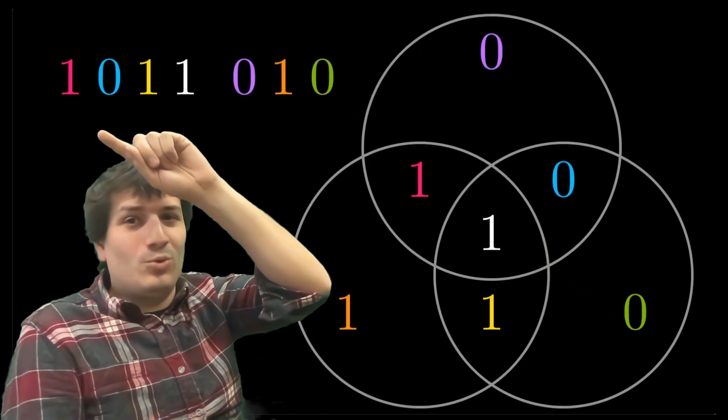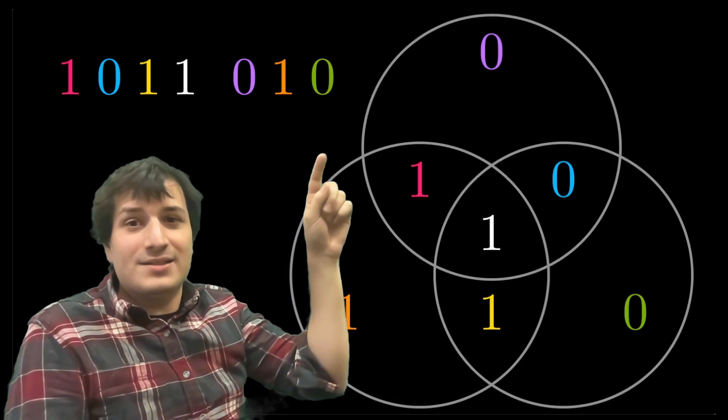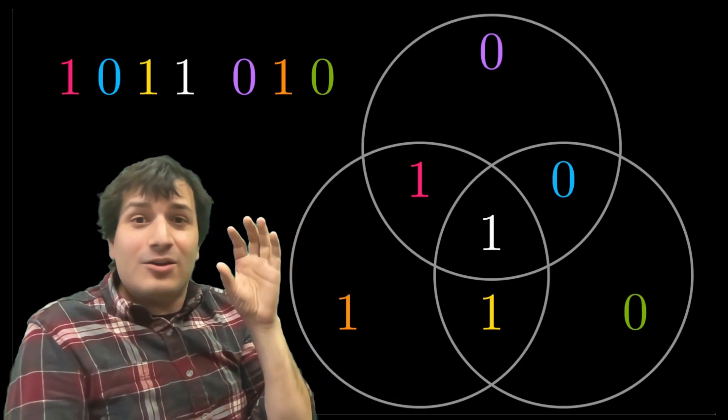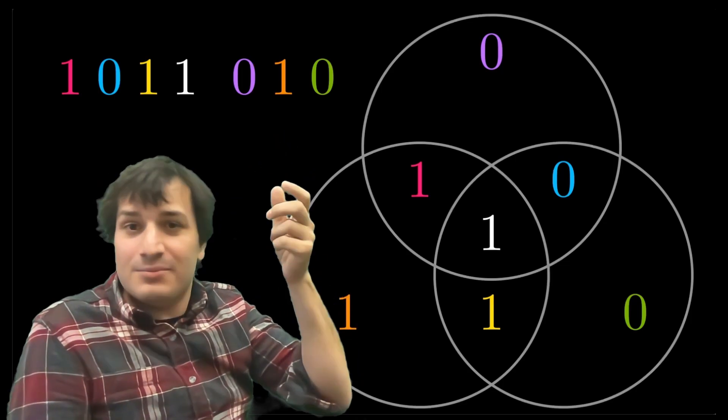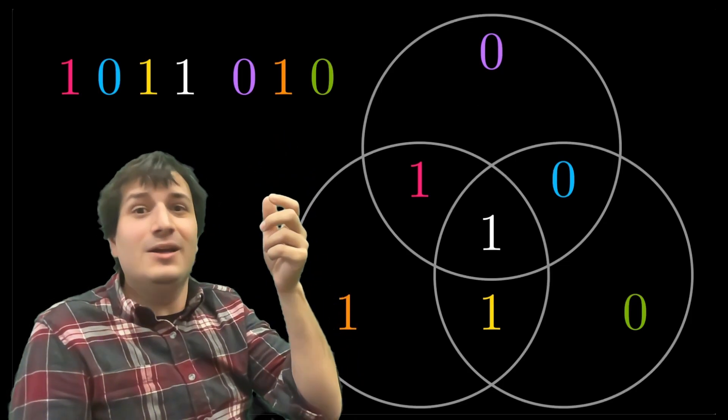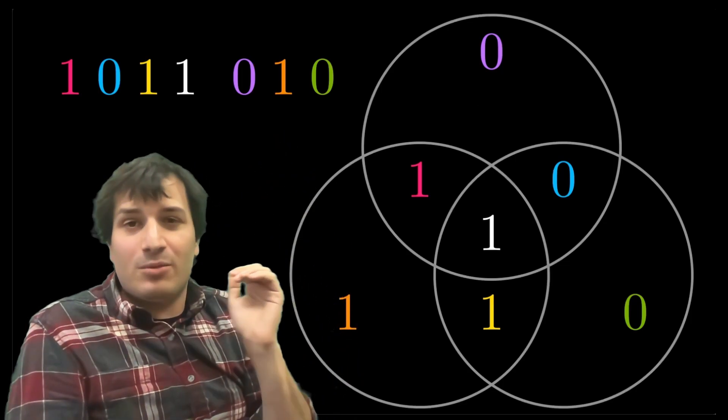So Alice will send the message one zero one one zero one zero to Bob. And when Bob receives the message, if one of these things is flipped by random chance or by noise in the message channel, Bob should be able to recover what the original message was.